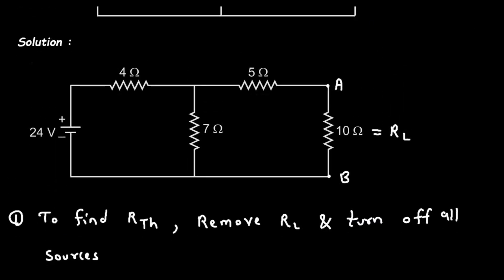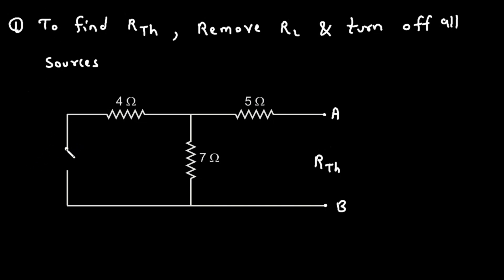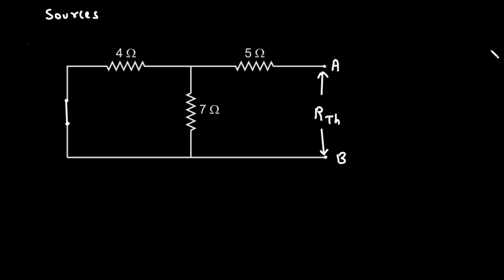Let's copy this circuit again. Now we have to find RTH, so we will remove this RL. Now if we remove this RL, this will be our RTH. We also have to turn off this voltage source. When we turn off a voltage source, it will be replaced by a short circuit. So this will be our RTH.